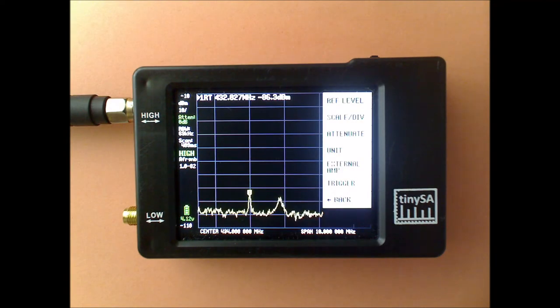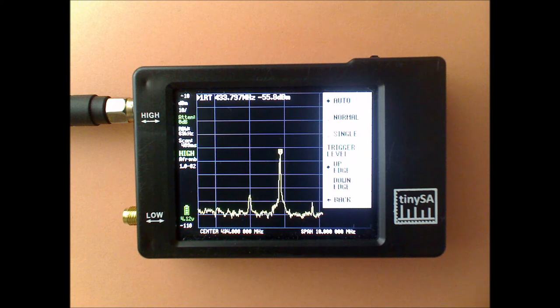The last item in the level menu is the trigger submenu. And to demonstrate that, I've switched to the high mode, center frequency 434 megahertz, 10 megahertz span. And I'm interested here to capture the frequency of some signals that are very briefly present.